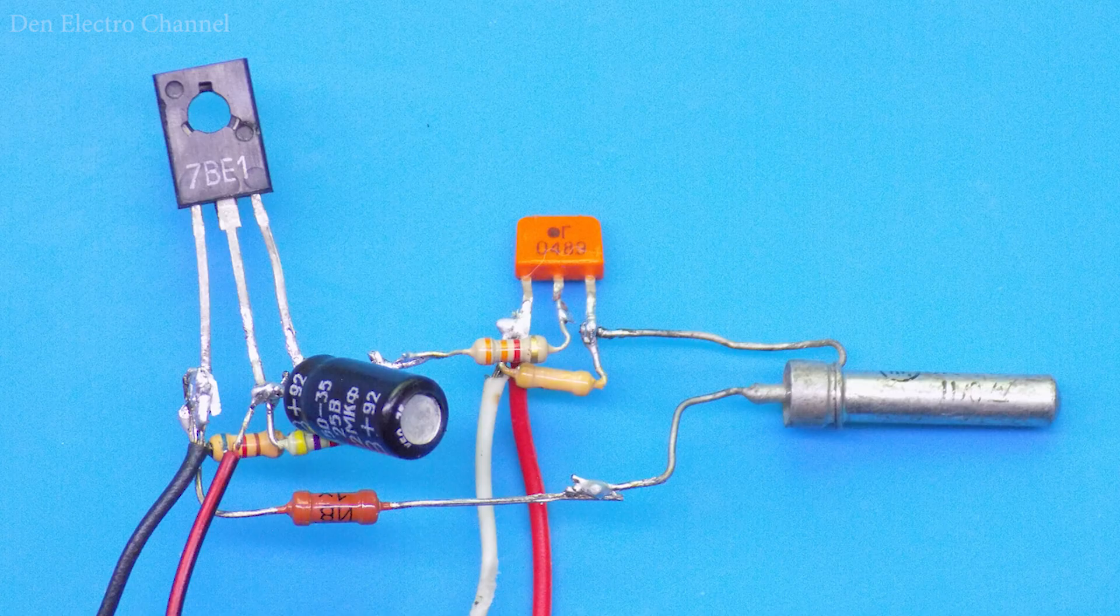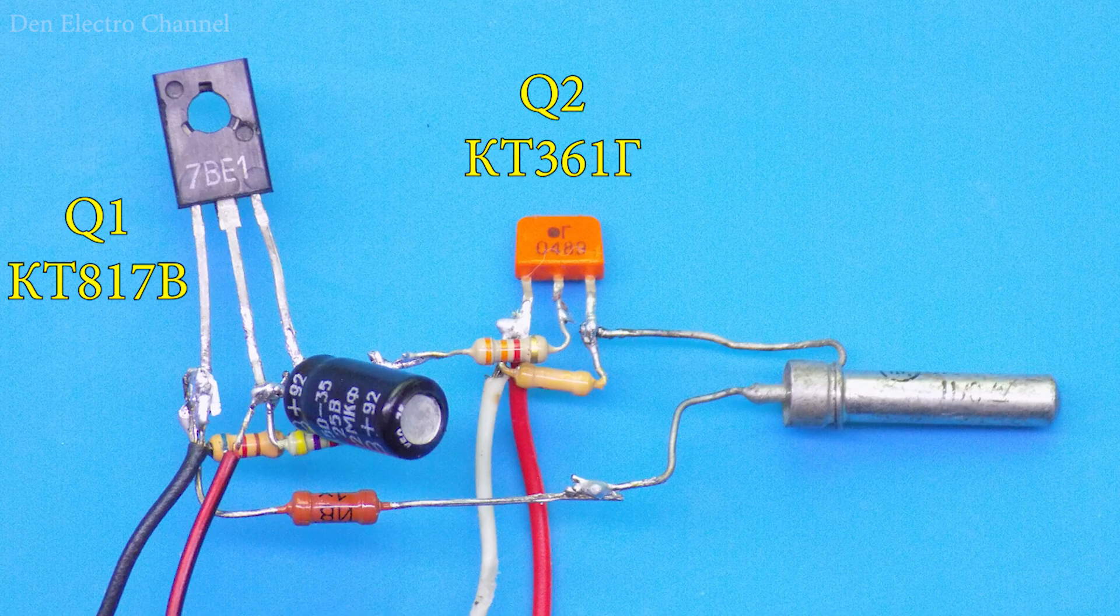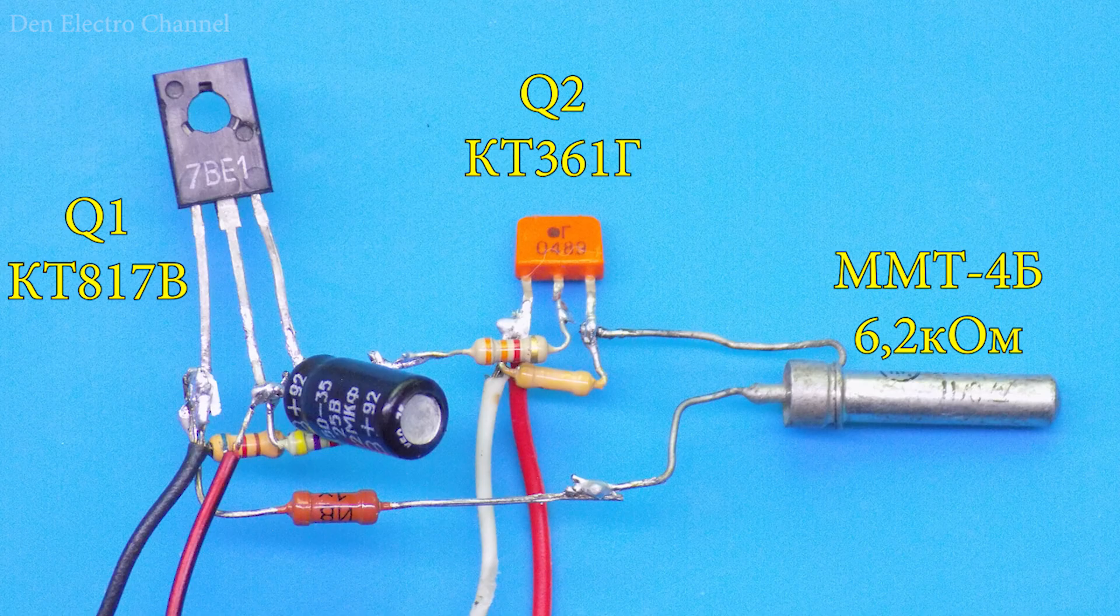A similar circuit can also be assembled on Soviet parts. I took KT817V as transistor Q1 and KT61G for Q2. Thermistor marked MMT4B is 6.2 kilo ohms. KT817V is perfect for both current and power, but its gain is only about 50, and this will affect the operation of the circuit.